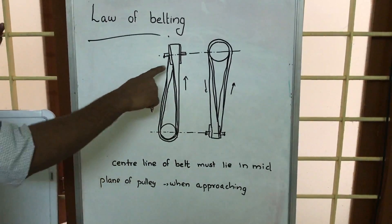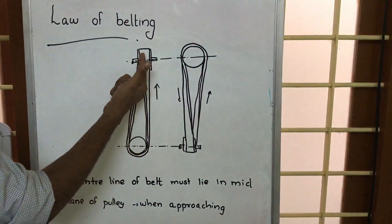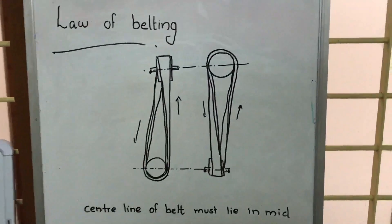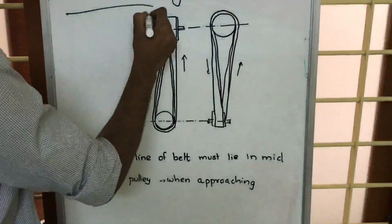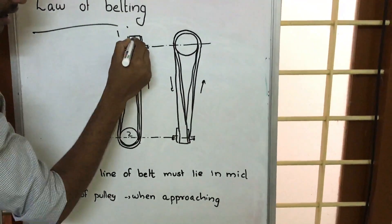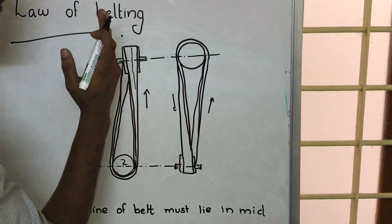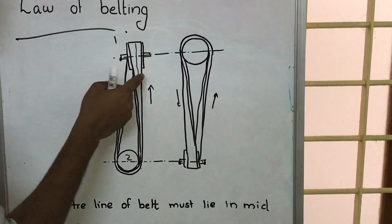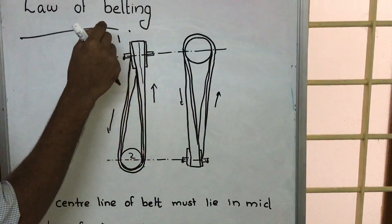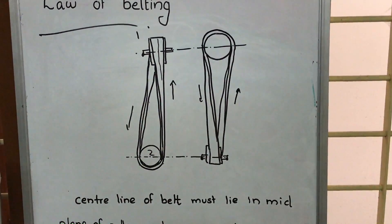That means here, this is the belt and we are having the right pulley and left pulley. When this belt approaches this pulley — let this be pulley 1, the upper one, and the lower one be pulley 2 — the center line of the belt is in the mid-plane of pulley 1. When the belt leaves the pulley it may not be so, but whenever the belt approaches the pulley the center line of the belt should be in the mid-plane of the pulley. This is what the law of belting says.